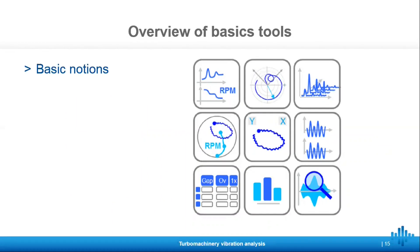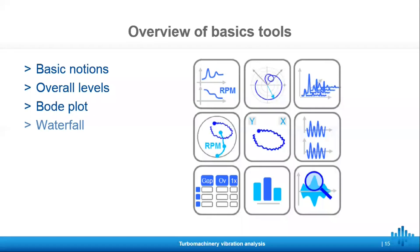First we'll cover basic notions such as position, orbit, and shaft centerline. Then we'll take a look at the overall levels and standards that we can use for turbomachinery analysis. We'll also take a look at the Bode plot to determine critical speed, and after that we will look at the waterfall spectra, which will help us better understand if there are any issues on the structural side or the rotor side. Lastly, we'll take a look at the orbital analysis, which is powerful due to its ability to have signatures with the orbits.